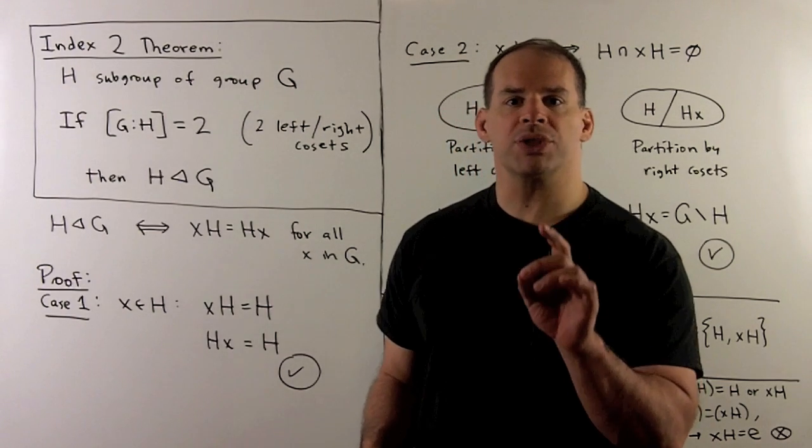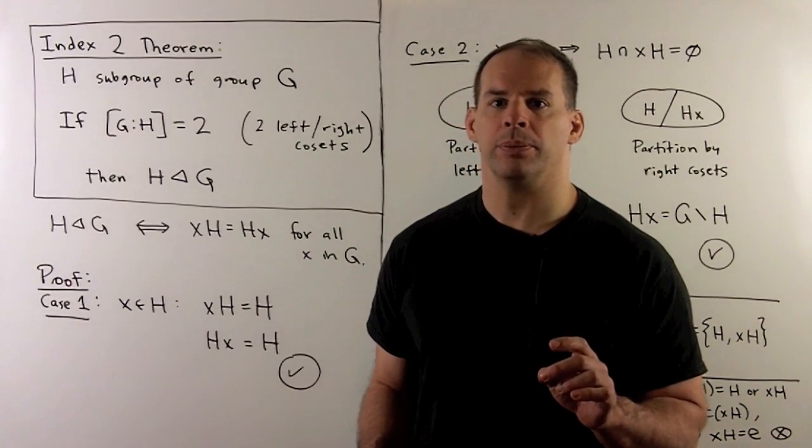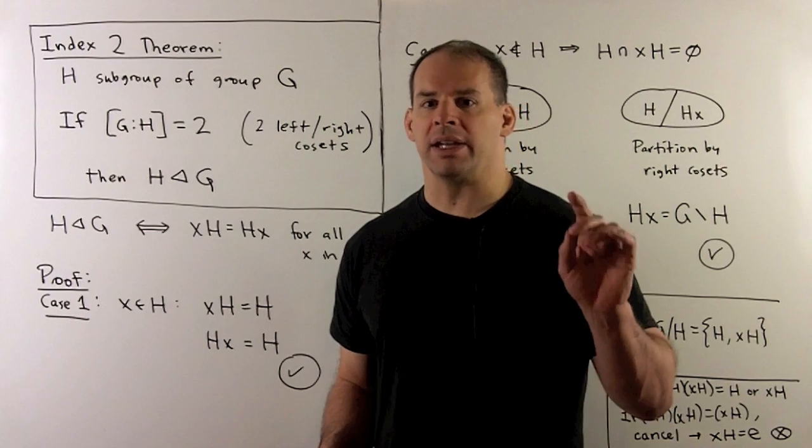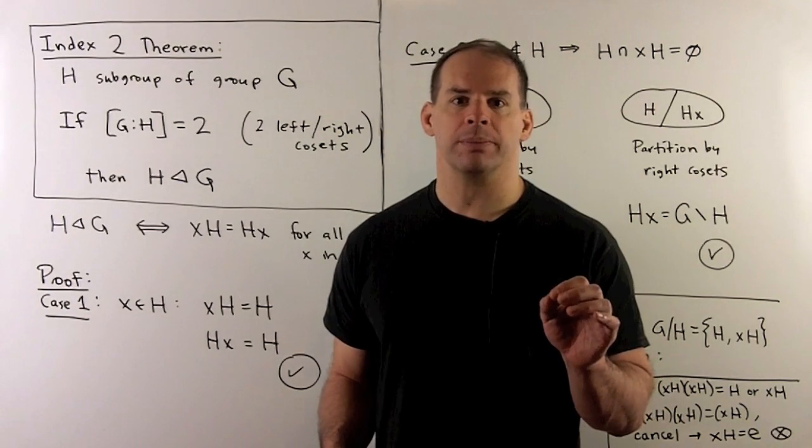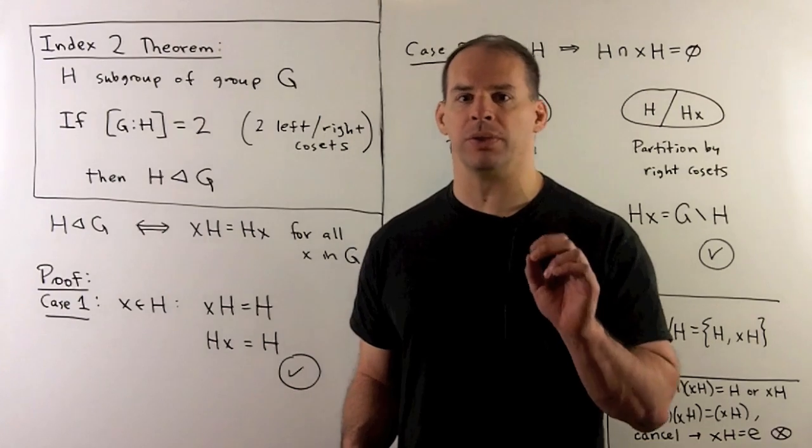We've seen that normal subgroups are the key ingredient in forming quotient groups. Because of that, we're interested in rules that let us detect normal subgroups. We start with a special case of the index 2 theorem.